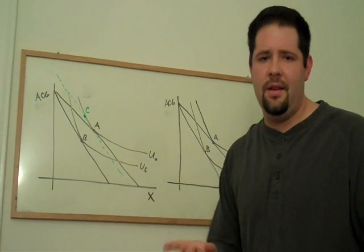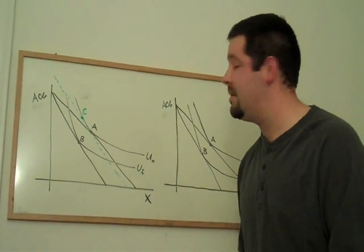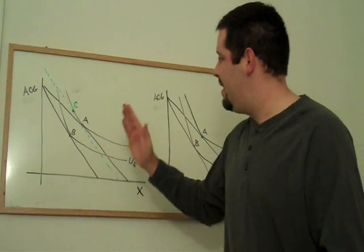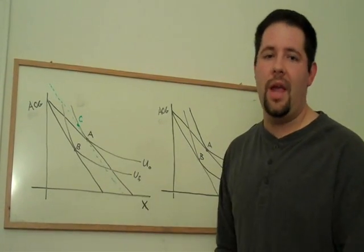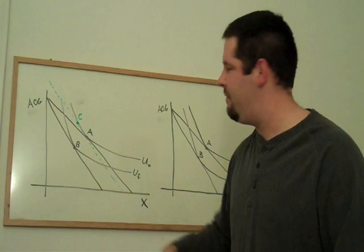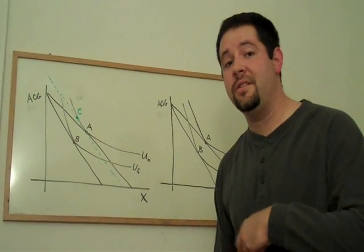Now, one thing that we didn't think about when we were talking about the income and substitution effects was how much money do we have to compensate that person. Well, it turns out that the amount of money that we have to compensate this individual to make him feel just as well off as before is a measure of the welfare change due to that price increase.